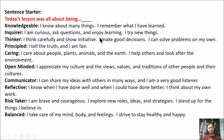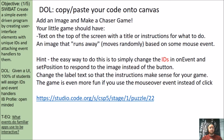Think about the lesson and pick an IB attribute to associate with the content of the day. Here's your DOL: add an image and make a chaser game — or at least start one. Your game should have text at the top of the screen with a title or instructions, and an image that runs away — moving randomly based on a mouse event. The easy way to do this is to change the IDs in onEvent and setPosition to respond to the image instead of the button. I look forward to seeing your work.